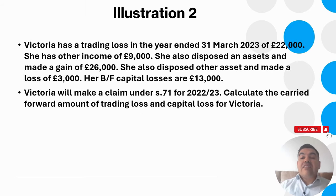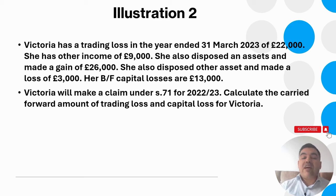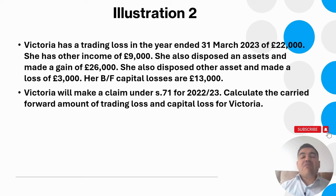Illustration — Victoria has a trading loss of £22,000 for the year ended 31st March 2023. She has other income of £9,000, a gain of £26,000 on disposal of one asset, a loss of £3,000 on disposal of another asset, and brought-forward capital losses of £13,000. Victoria wishes to make a claim under s71 for 2022-23 to use the trading loss against capital gains. Before making an s71 claim, she must make an s64 claim, using £9,000 of the trading loss against net income of £9,000.